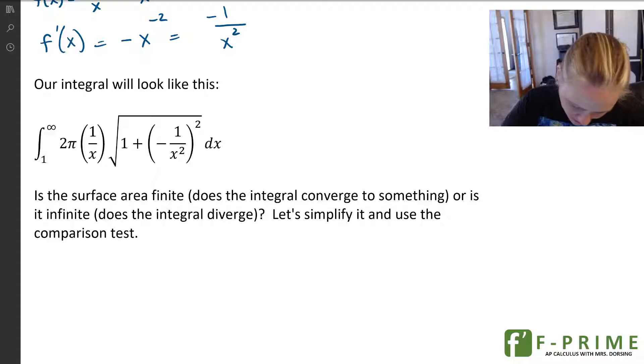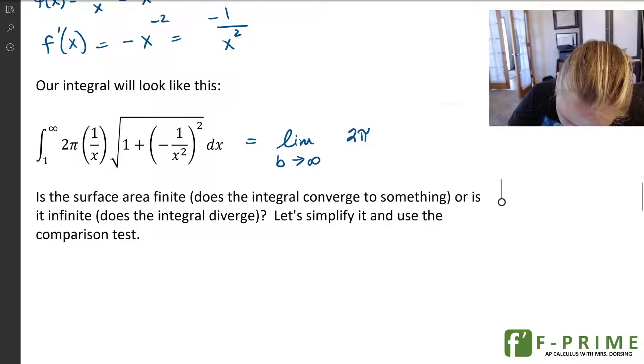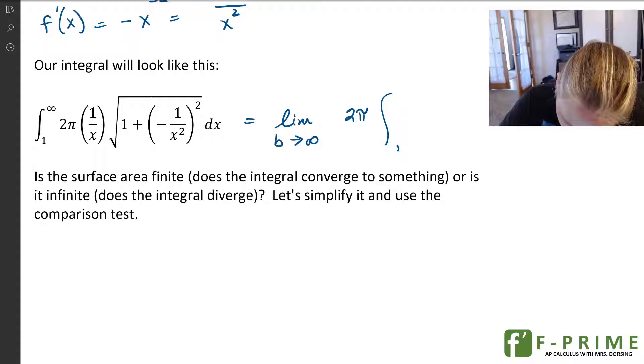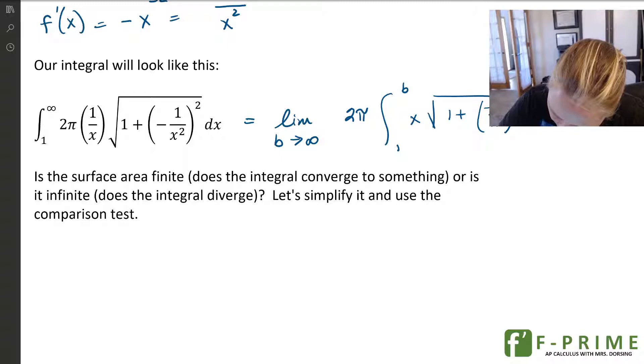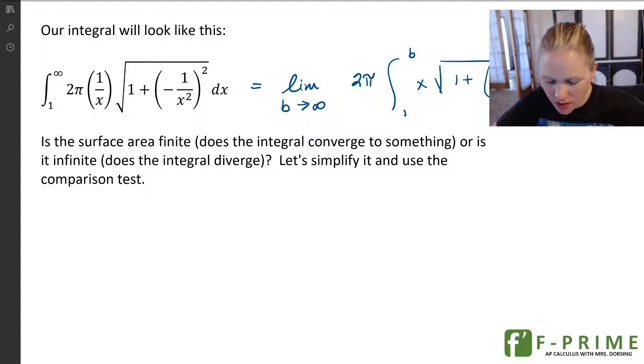So our integral looks like this. Now, let's see. Let's set it up as a limit. The limit as b approaches infinity. And I'm going to pull the 2π out. And I'm going to have 1/x times that square root of 1 plus negative 1 over x squared, squared, dx.